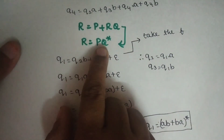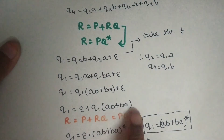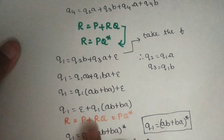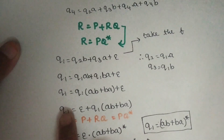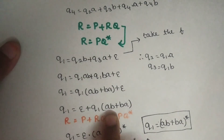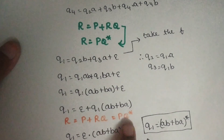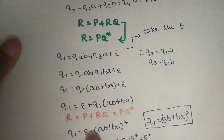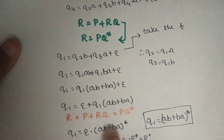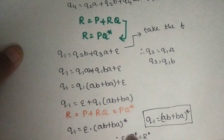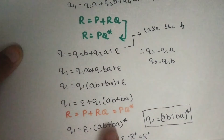This becomes R equals PQ closure. So Q1 equals Epsilon into AB plus BA star — that is, AB plus BA closure. This is how you convert a finite automaton to regular expressions using Arden's Lemma. The final regular expression is Epsilon into AB plus BA star.